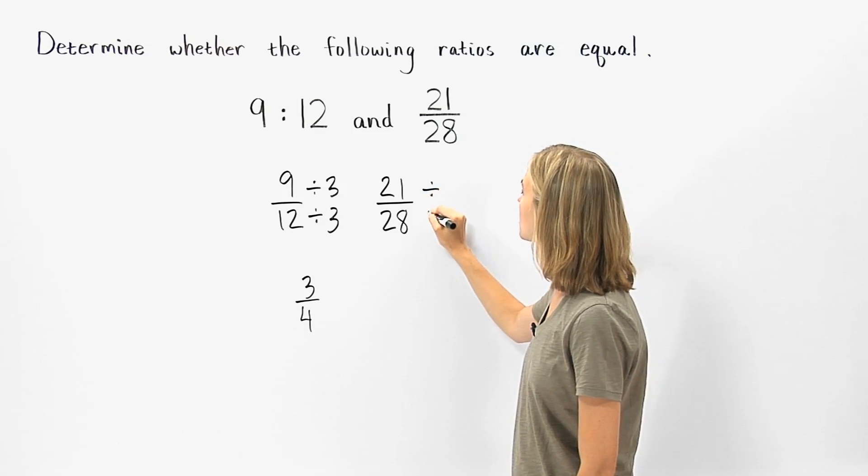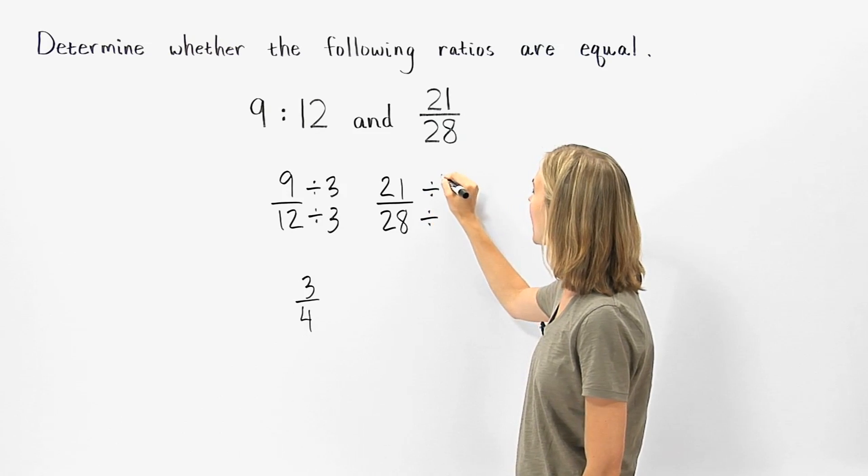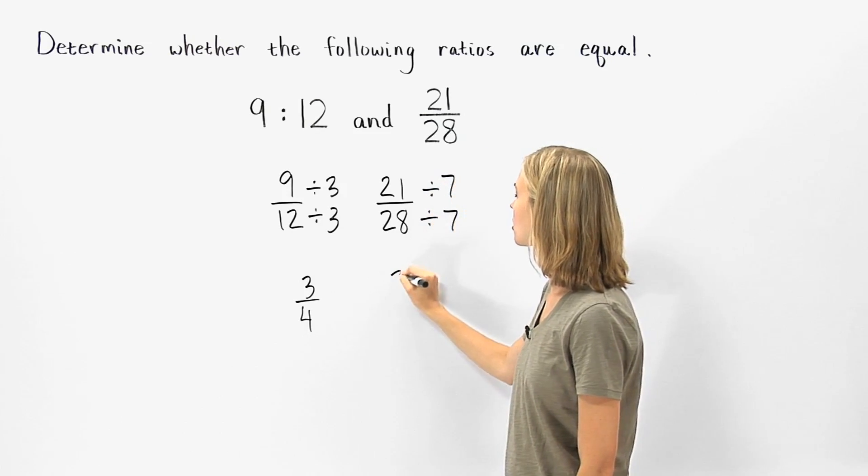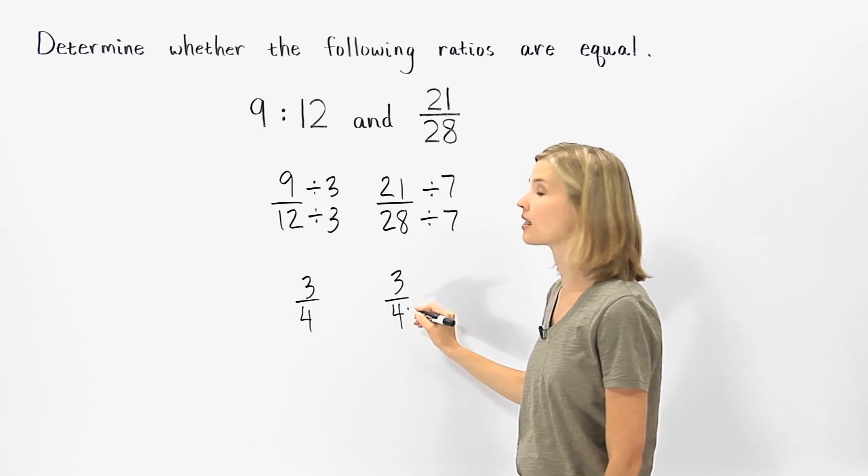And dividing the numerator and denominator of 21 over 28 by 7, we get the equivalent fraction 3 fourths, which is in lowest terms.